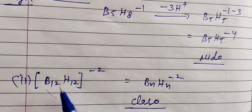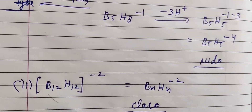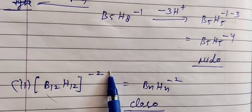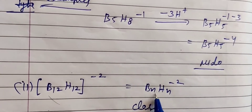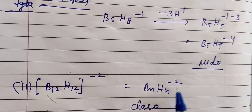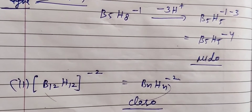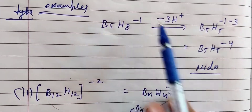Second example: B12H12²⁻. This matches BnHn²⁻, so it has a closo structure.